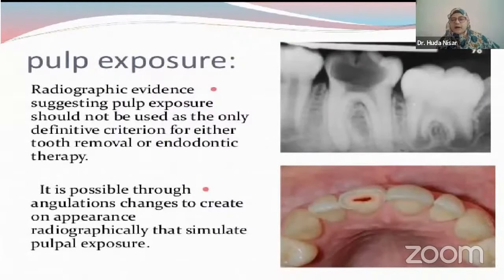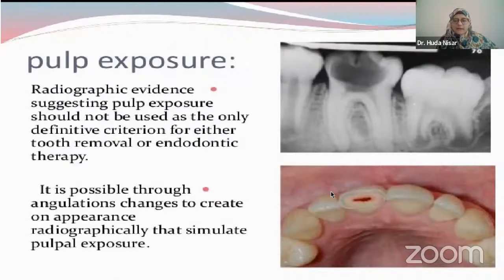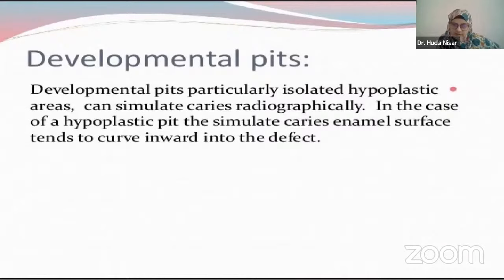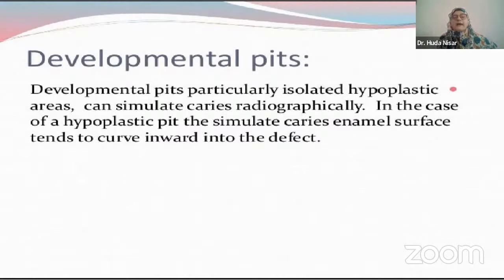Then we have pulp exposure. Pulp exposures could be clinically appreciated, but radiographically you have a better view of the condition. If while doing a procedure you have inadvertently induced a pulp exposure, it would look somewhat like bleeding from the tooth surface. Now we have developmental pits, dens in dente, and all of these conditions may give you a sense that the tooth is radiographically not fine. But your diagnosis should be based on a complete balance of your clinical findings and radiographic findings — you should not completely rely on either alone. Even though you have seen the radiograph, you should still observe the tooth and the condition of the tooth and then only plan your treatment.